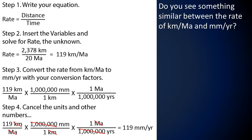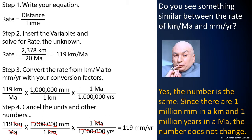Step 3: convert the rate from kilometers per million years to millimeters per year using conversion factors. Note that there are a million millimeters per kilometer, and there are a million years in a million years. Step 4: cancel units and numbers. We cancel kilometers, cancel Ma, and cancel a million in the numerator and denominator. Multiplying this out, we find our rate to be 119 millimeters per year. Since there are one million millimeters in a kilometer and one million years in a million years, the number does not change.